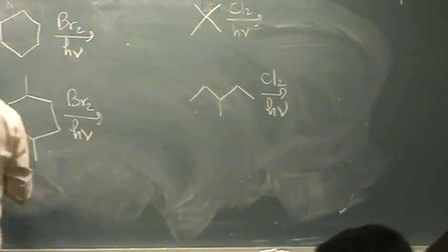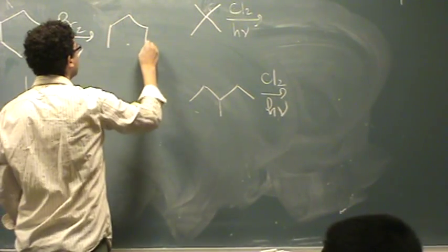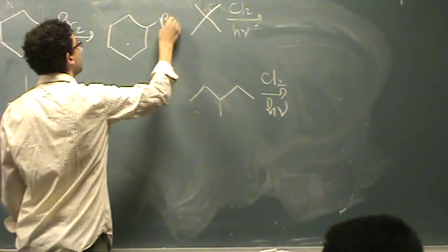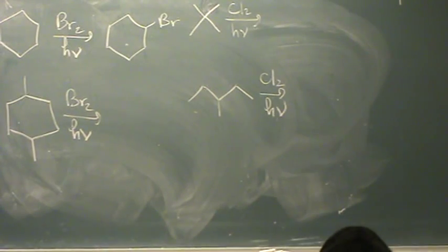So we look over here. All of these on the cyclohexane are secondaries. So it doesn't matter where I put it. They're all equivalent locations. So you just put it wherever you feel like it. This, no matter where you put it, it's still one bromocyclohexane.